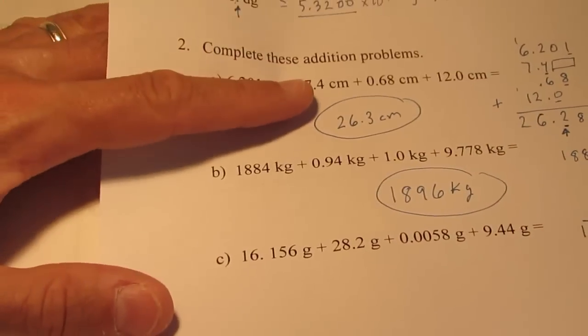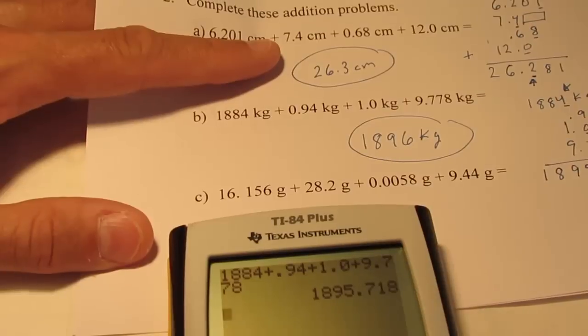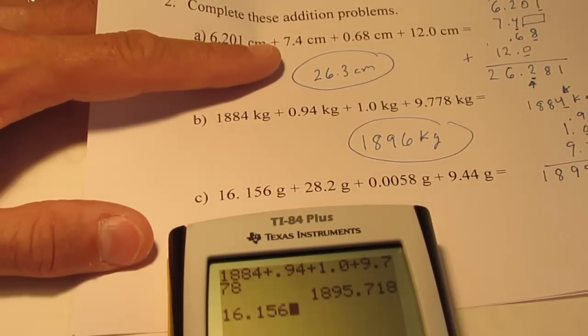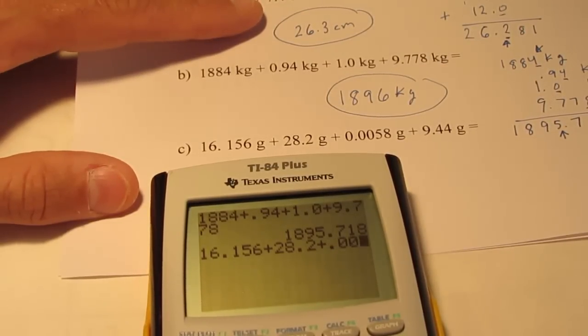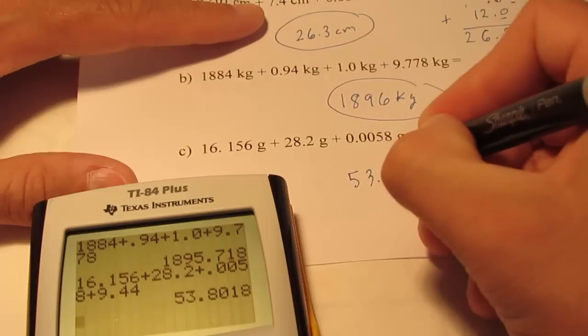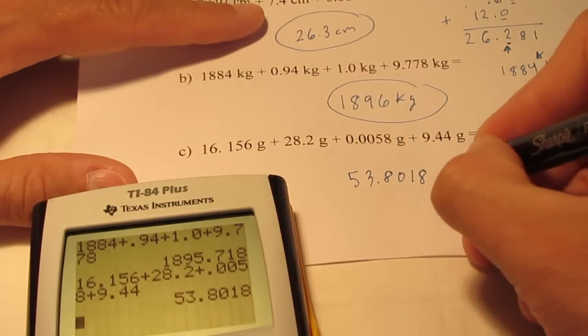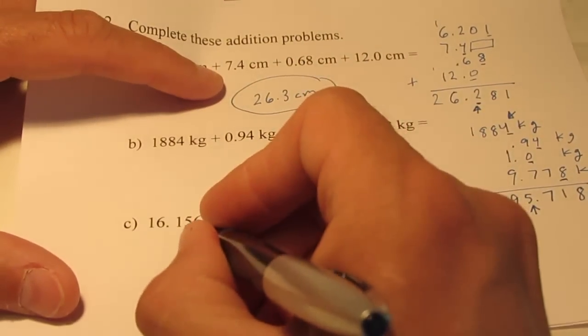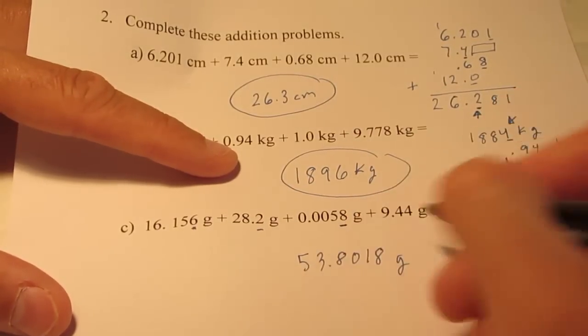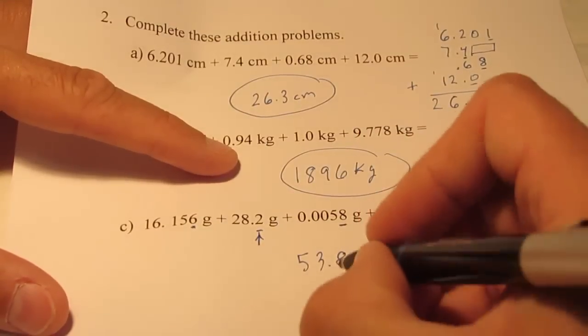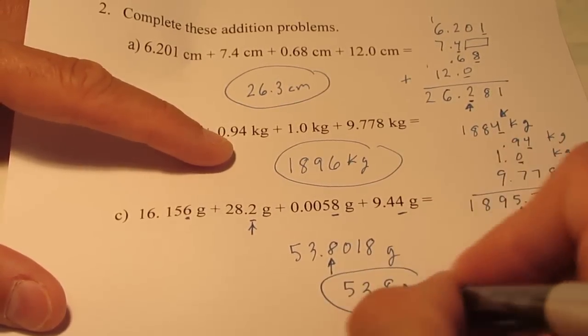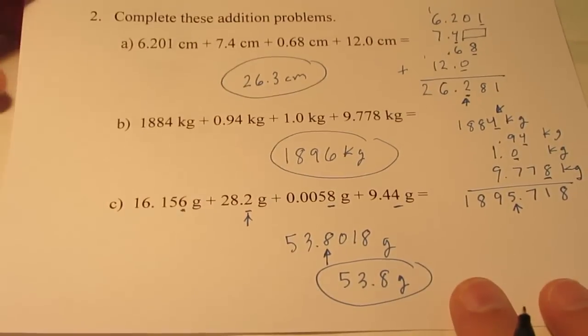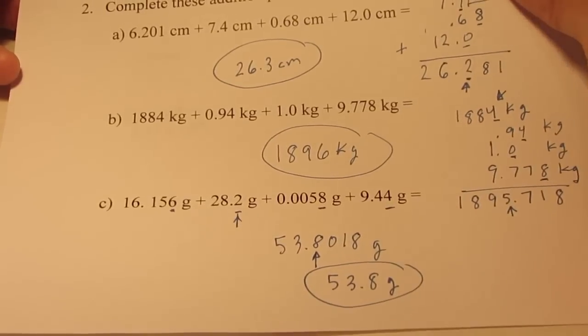Let's try letter C. Let's just do this straight in my calculator. We have 16.156 plus 28.2 plus .0058 and then we'll add 9.44. My calculator says 53.8018 grams. Let's see, this one is to the nearest thousandth, the nearest tenth, the nearest ten-thousandth, and the nearest hundredth. My least accurate is to the nearest tenth, so I need to round that off to the nearest tenth. So, this becomes 53.8 grams. Okay? Remember when we add and subtract, we don't look at sig figs. We look at where the decimal is.